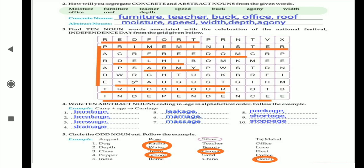Now we will move to the second question. How will you segregate concrete and abstract nouns from the given words? In the previous video you have seen the difference between concrete and abstract nouns. Concrete means which we can feel using five senses, and abstract noun means we can feel only, we can't use five senses.